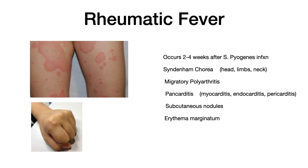Rheumatic fever typically occurs two to four weeks after a Strep pyogenes infection. You'll see Sydenham's chorea — irregular, non-repetitive movements of the head, limbs, and neck — thought to be due to cross-reactivity against the basal ganglia. You can also see migratory polyarthritis, pancarditis (myocarditis, endocarditis, and/or pericarditis), subcutaneous nodules, and erythema marginatum. If you see abnormal movements or a weird rash, think Strep pyogenes and rheumatic fever.